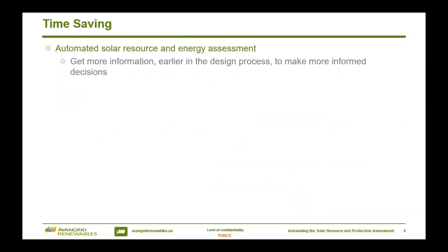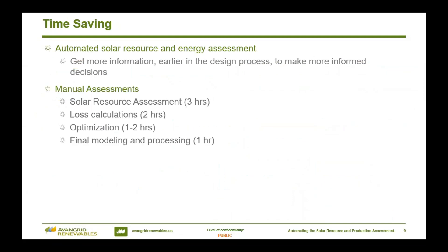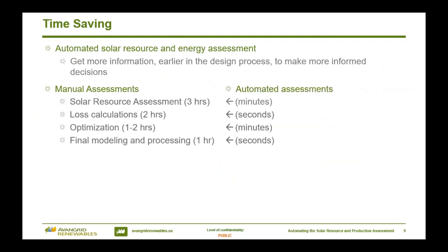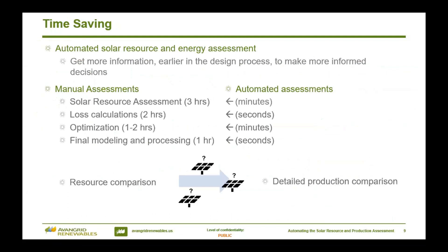So where do I stand on my goal? I wanted to save time so that I could pull more information earlier into my design process. Using Avangrid's methodology, a solar resource assessment will take me about three hours. Loss calculations might be another one to two hours. The optimization process might be another one to two hours. Going through every single part of my model to make sure it's ready for financial investment decisions might be another hour. When I've automated this process, hours and days turned into minutes and seconds. So when we were back at that site selection step, we were able to transition from a resource comparison all the way to a detailed production comparison.